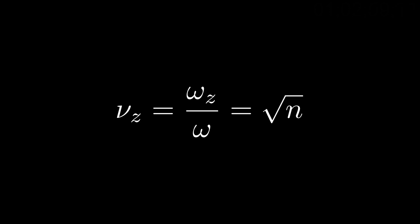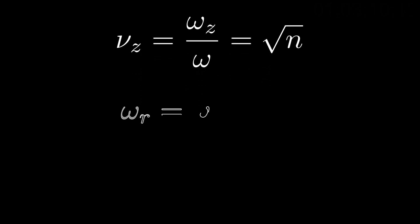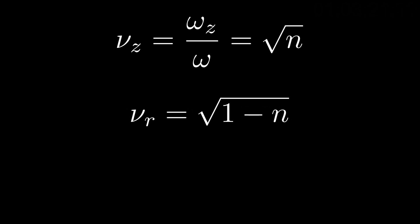For vertical stability, there is no upper limit on n — n simply has to be greater than zero, and the greater n, the greater the restoring force. Radial stability can be arrived at using a similar analysis, and we find that omega_r equals omega times the square root of 1 minus n. The radial tune nu_r is the number of oscillations the particle makes about its equilibrium orbit in the midplane per revolution, which in the weak focusing field is the square root of 1 minus n. Therefore, for complete transverse stability in both the axial and radial directions, n is bounded to be greater than zero and less than one.